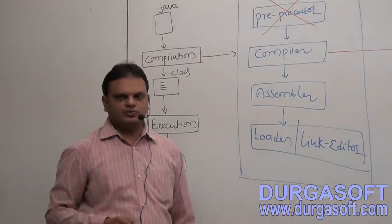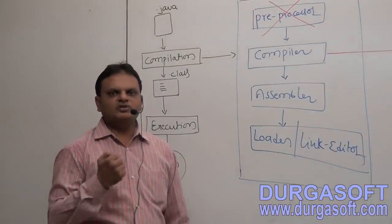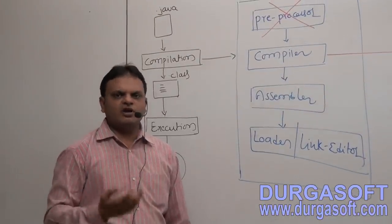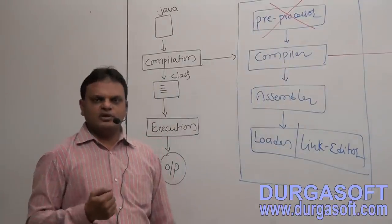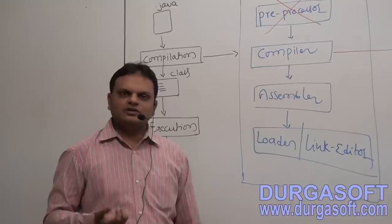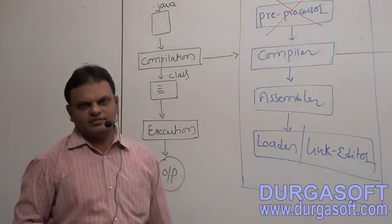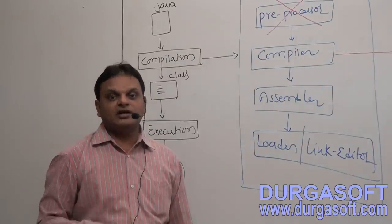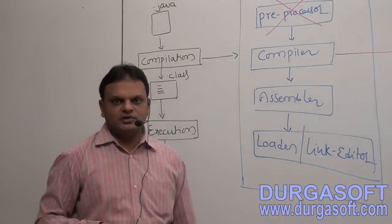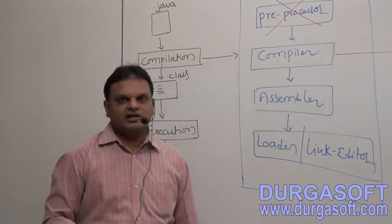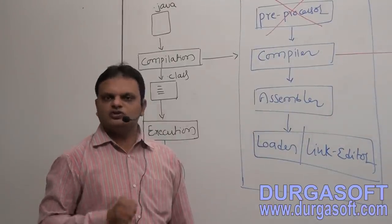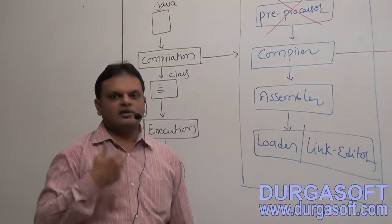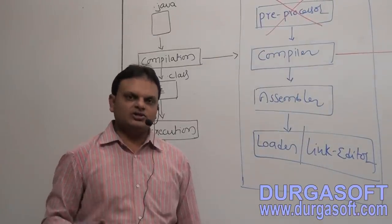The main difference between comments and annotations is: comments' life is maximum up to source code, but annotations' life is up to source code, up to the .class file, and up to runtime of our application. Not only that — if we provide description using comments, we are unable to access it programmatically. But annotations provide the flexibility to access metadata even programmatically.